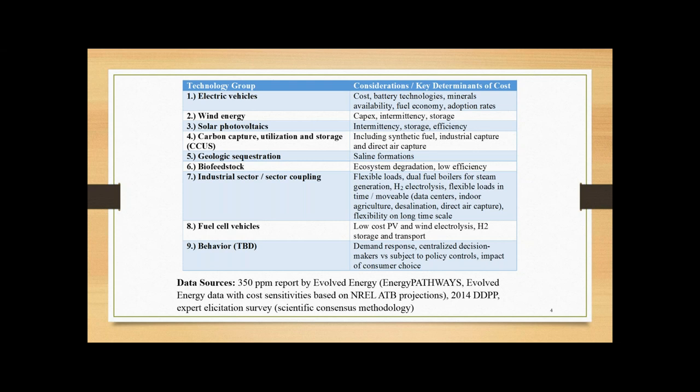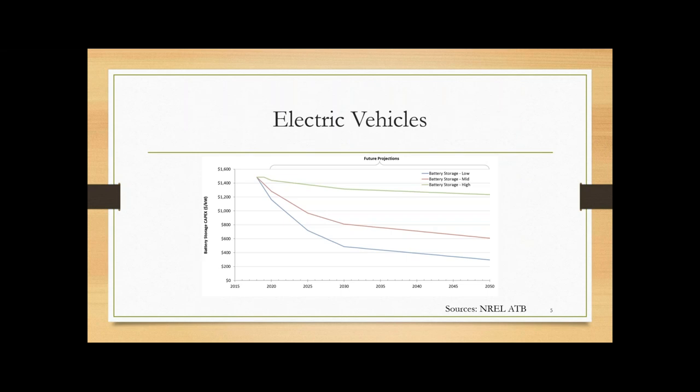So these are the technology groups broken down. We have electric vehicles, wind energy, solar photovoltaics, carbon capture utilization and storage, geologic sequestration, biofeedstock, industrial sector, fuel cell vehicles, as well as a potential ninth category, which is behavior relating to demand response. The primary data sources that are not expert elicitation come from the Evolved Energy Pathways report, as well as the 2014 DDPP. So for the first group, electric vehicles, the research I've been conducting so far is tied to primarily the cost of batteries. You can see here NREL's annual technology baseline is the primary data source. So the kinds of predictions that I'm looking for here are dollars per kilowatt and future projections based on both data, as well as expert elicitation.